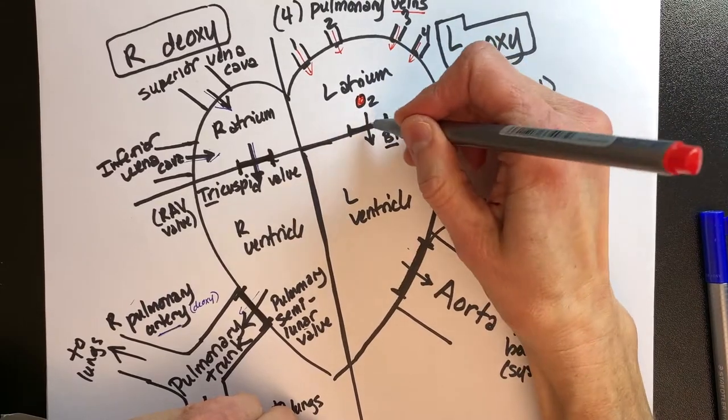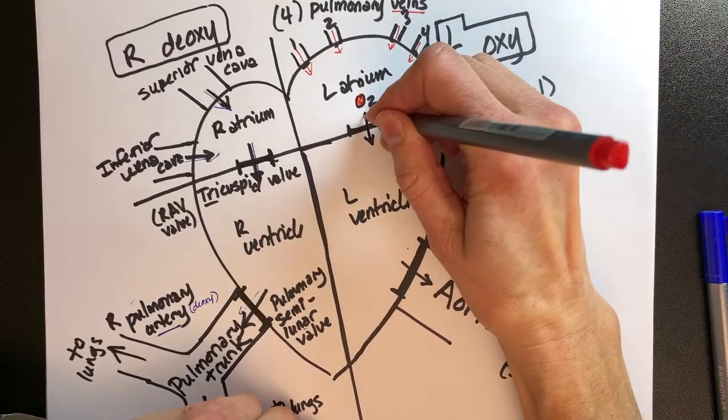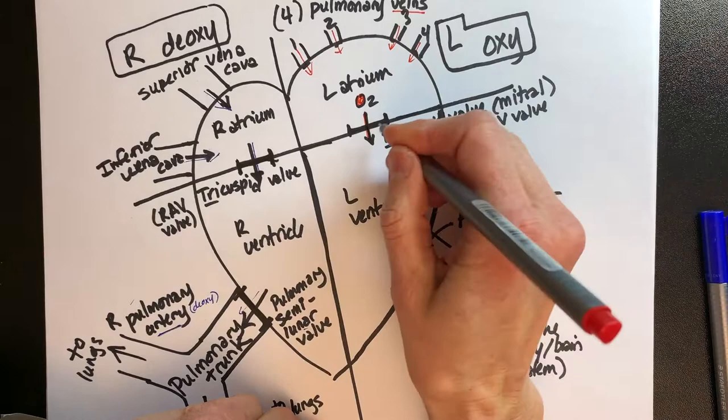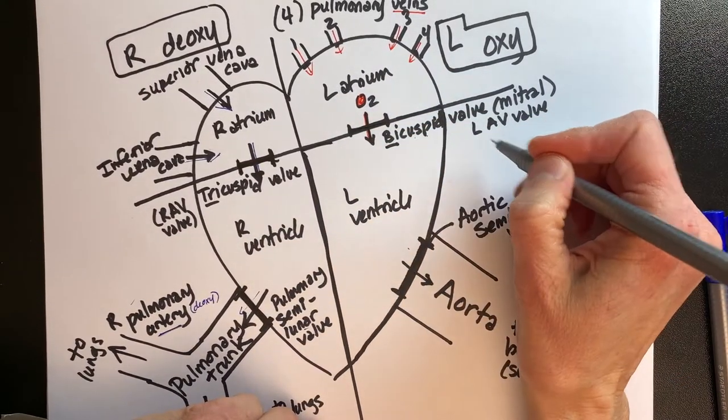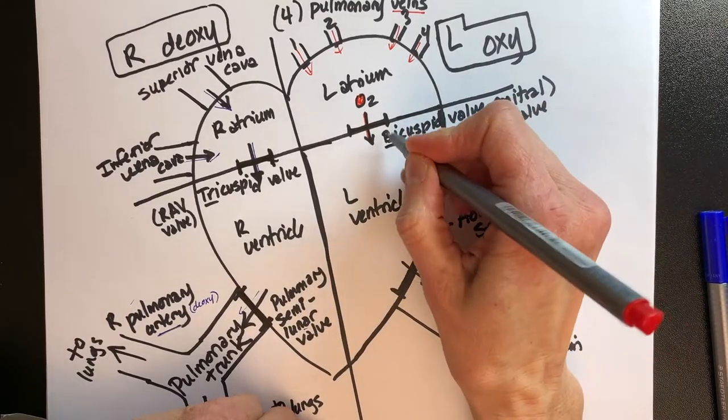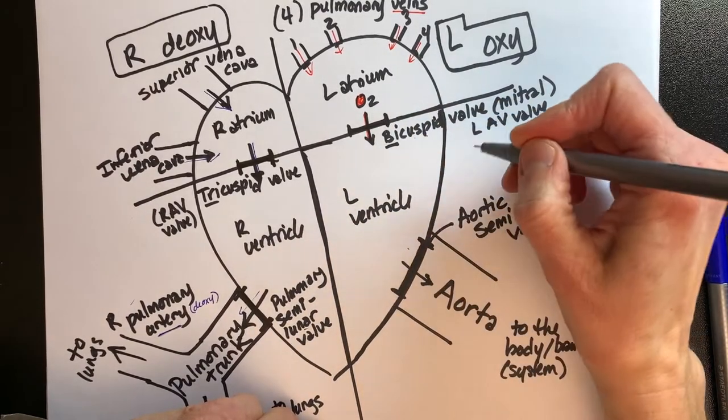Now we need to get that oxygenated blood downstairs to that big left ventricle. We're going to go through this door or valve called the bicuspid valve. And again, bi means two, so there's going to be two cusps.